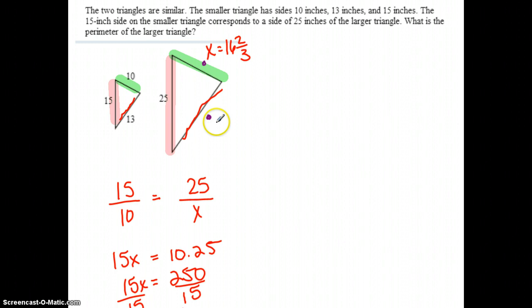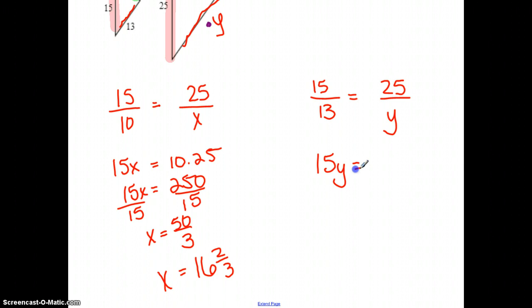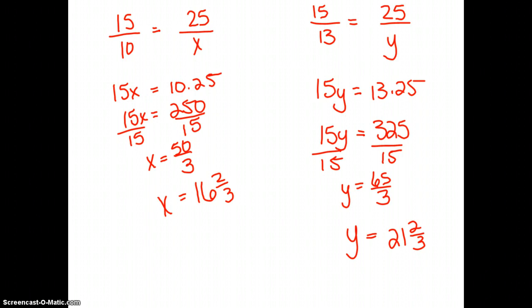Now, I'm just going to call this Y just so I have a different letter there. If I set this up, 15 and 25 are going to have to be in both, but Y is going to match up with 13. Cross multiply: 15Y equals 13 times 25, which is 325. And 325 over 15 is going to reduce to 65 over 3, which is 21 and two-thirds. So this side is 21 and two-thirds.